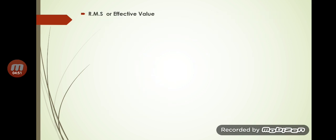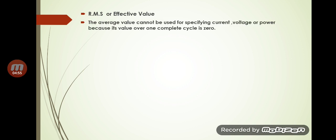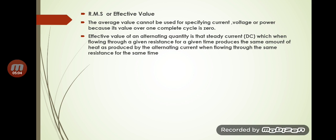Next is RMS or effective value. The average value cannot be used for specifying current, voltage, or power because its value over one complete cycle is zero. So we introduce another value known as the effective or RMS value.